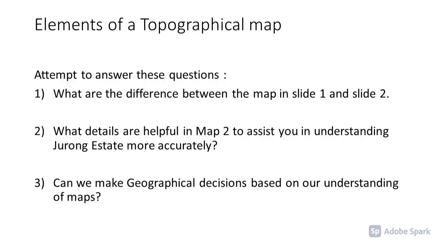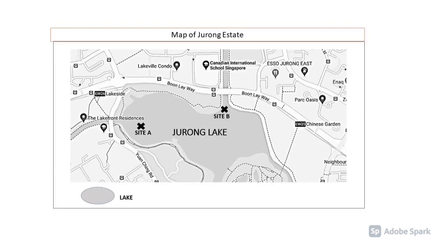The first question is: what are the differences between the map in Slide 1 and Slide 2? The map in Slide 2 is with you — your map is the map in Slide 2. So I'm going to bring back Slide 1 and let's do an analysis. My map is a map of Drone Estate. There are very little markings on it — there are a lot of symbols all over the place, but you do not have any explanation for what the symbols actually represent. What you see is actually only one symbol that represents the lake.